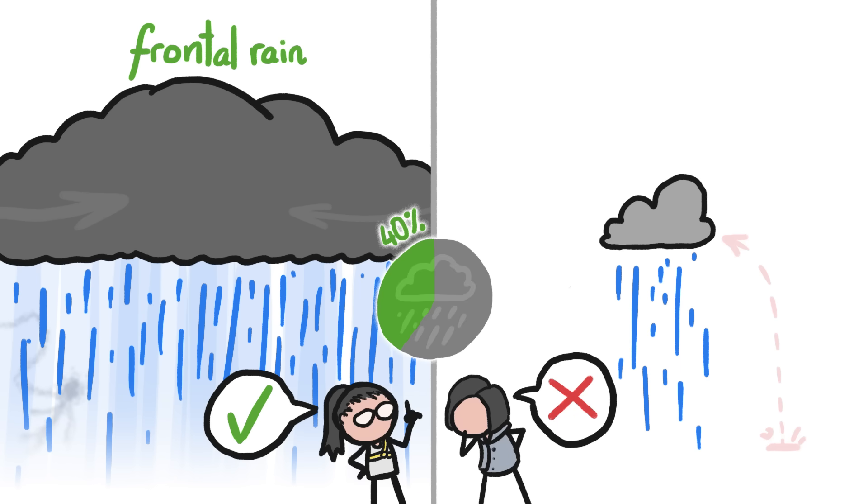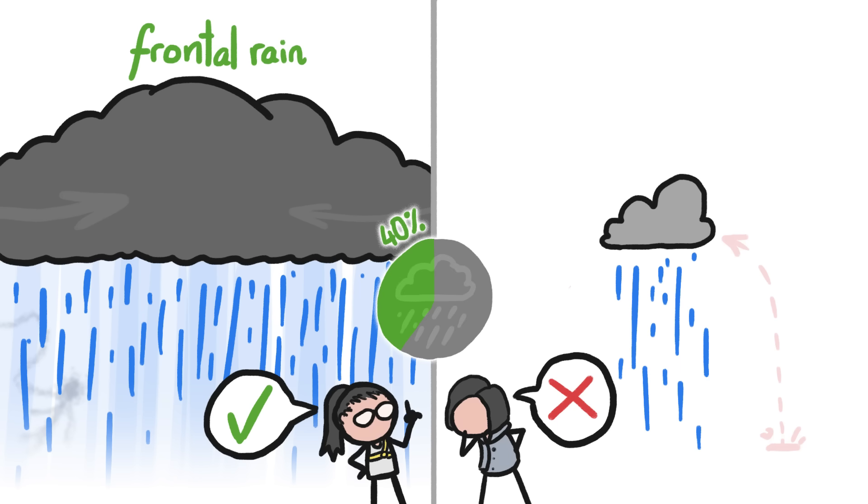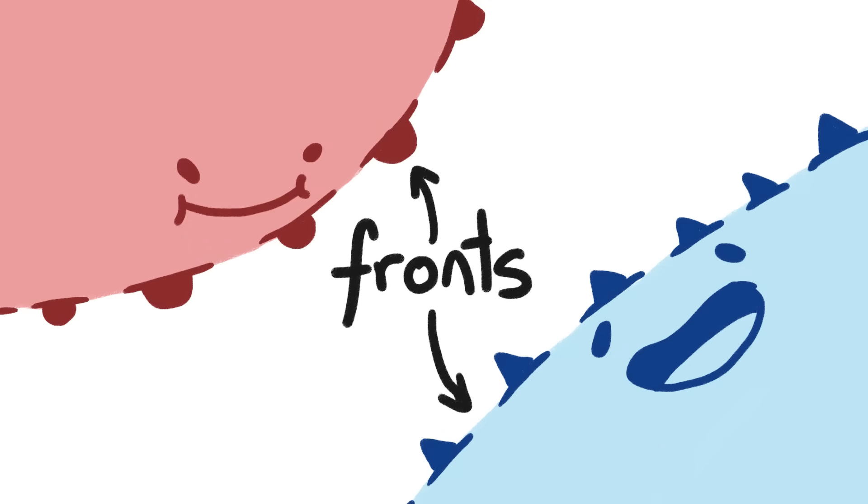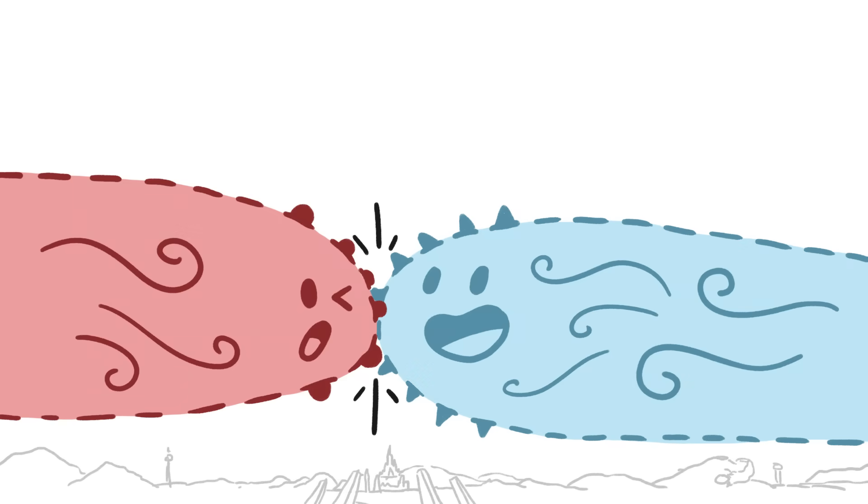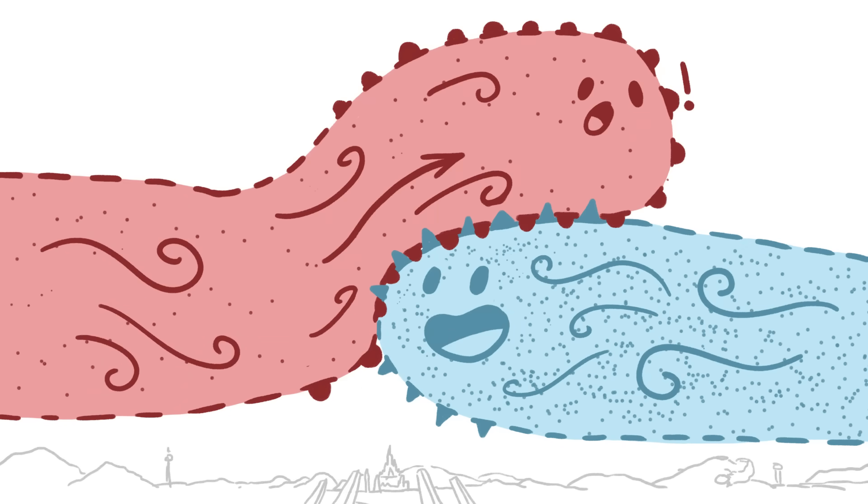The first kind, which makes up about 40% of the rain we experience, is the long-lasting, grey skies all day kind of rain. This comes from giant air masses called fronts, which move around the planet. When a cold one runs into a warm one, the warm one, which is less dense, gets lifted up.